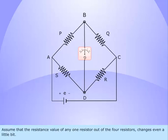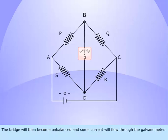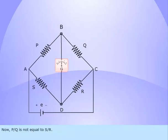Assume that the resistance value of any one resistor out of the four resistors changes even a little bit. The bridge will then become unbalanced and some current will flow through the galvanometer. Now P by Q is not equal to S by R.